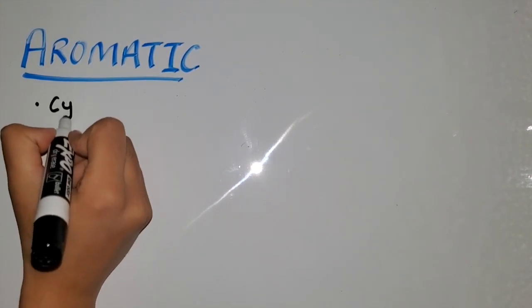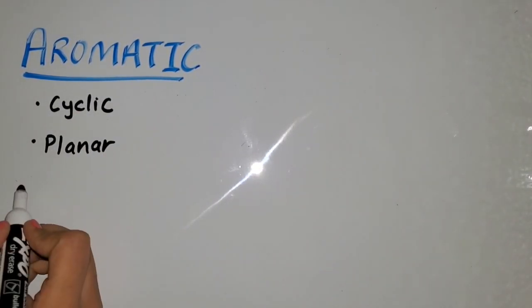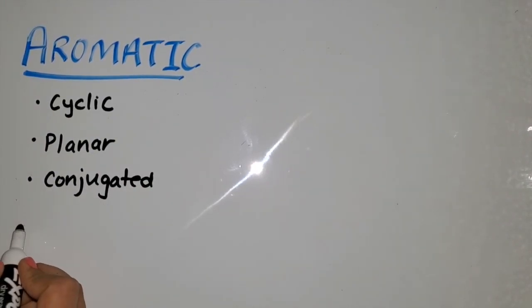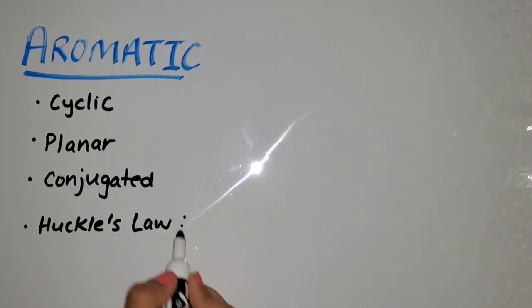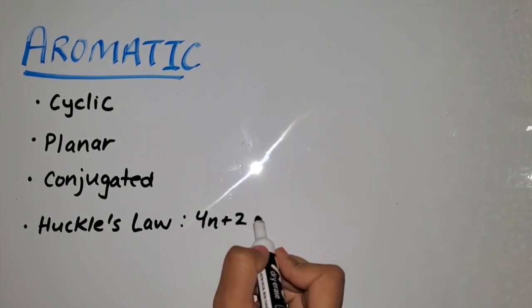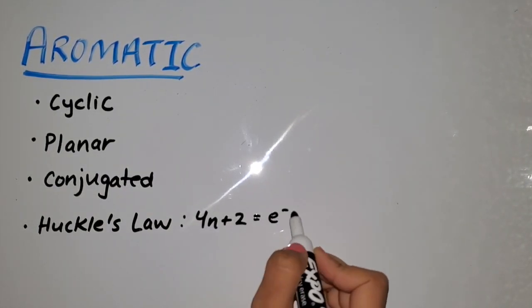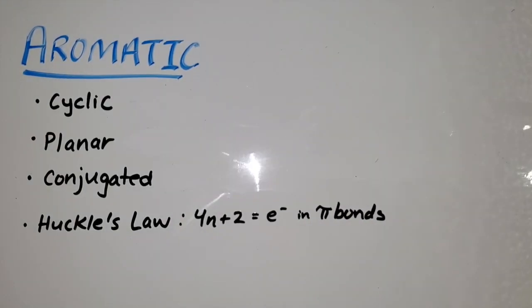The next thing we're going to focus on is how a molecule is aromatic. For a molecule to be aromatic, it has to be cyclic, it has to be planar, conjugated, and it needs to follow Huckel's Law, which is 4n + 2 equals the number of electrons in pi bonds. Let's go through all of these conditions one at a time.